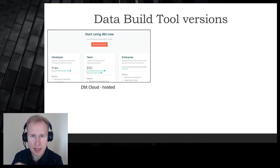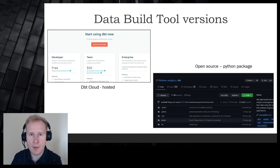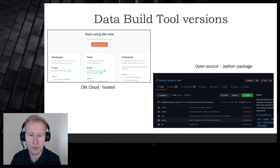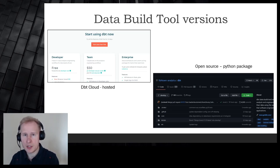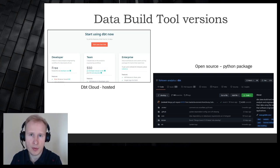dbt has a couple of versions: one is called dbt Cloud, a dbt-hosted environment which is paid, with different plans. In the context of this demo, I'm using the open-source Python package installed from pip, running it locally and targeting my Databricks, then deploying via Azure DevOps. This demo only touches the open-source path — I'm not touching the commercial version.